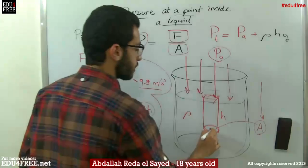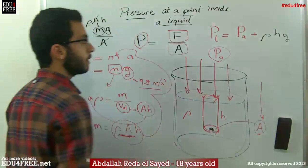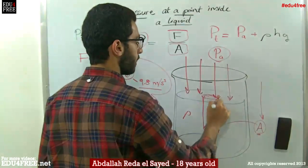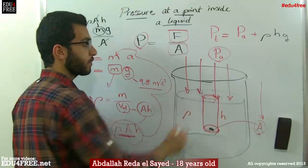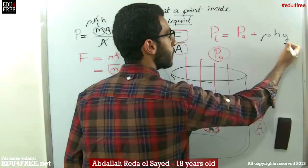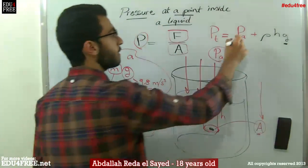So, this pressure at that point equals the density of the liquid multiplied by the height, the difference of height between this point and the surface of the liquid, multiplied by gravity.